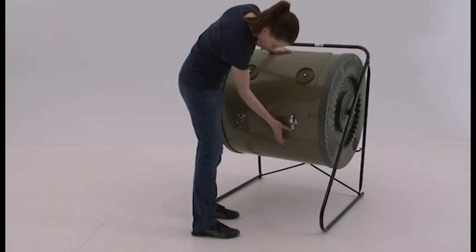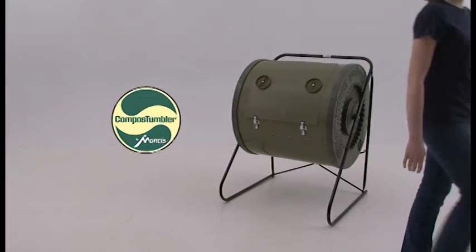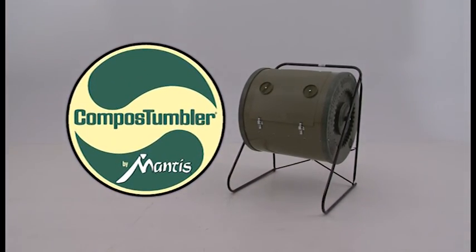Close the door and fasten the latches into the slots of the other side. Your compost tumbler is now completely assembled and ready to use.